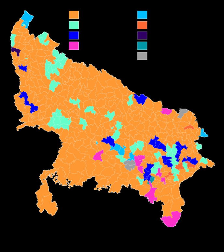Elections for the Uttarakhand State Assembly were held on 15 February 2017 with a 65.64% turnout. The result was declared on 11 March 2017.